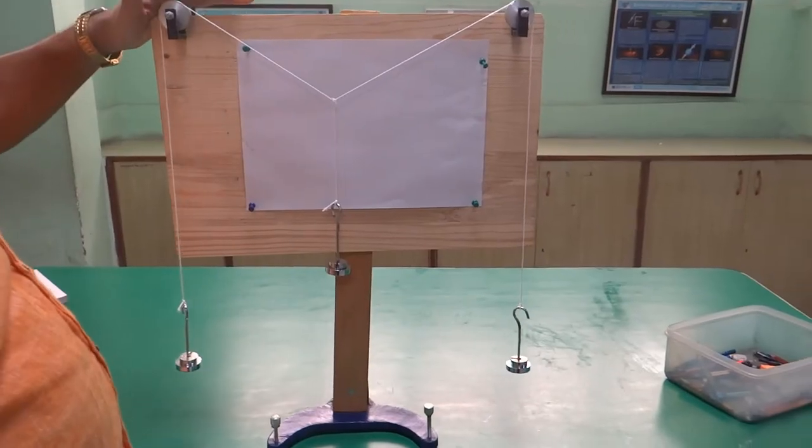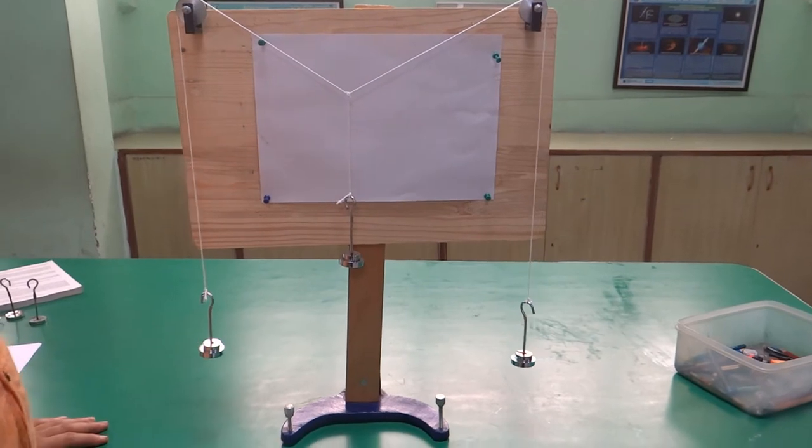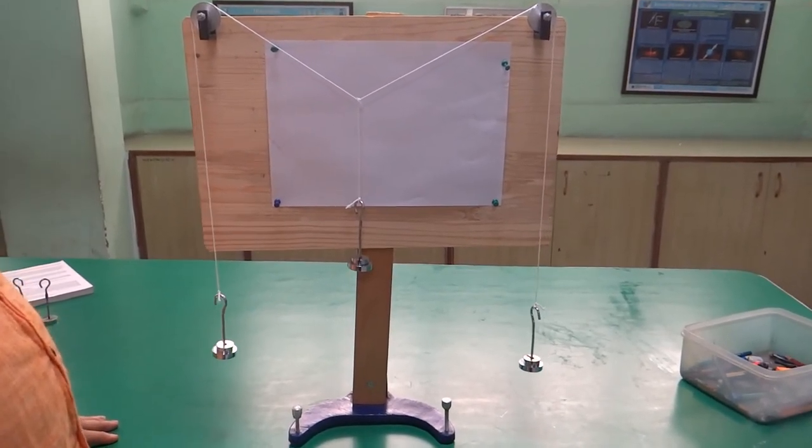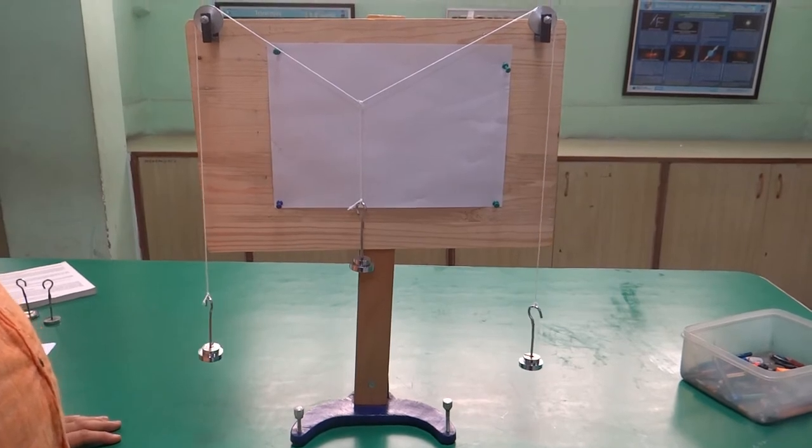This is called Gravesend Apparatus and with the help of Gravesend Apparatus, you can verify the Law of Parallelogram, which you have studied in Chapter 3.